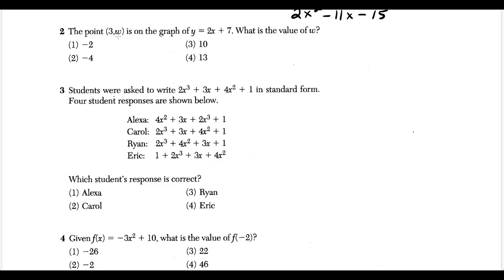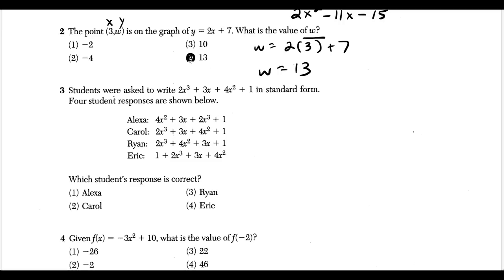For question two, the point (3, w) is on the graph of y equals 2x plus 7, and we want the value of w. Notice w is in the y spot, so we replace x with 3 and y with w. We get w equals 2 times 3 plus 7, which gives us 6 plus 7, equaling 13. So choice four is correct.